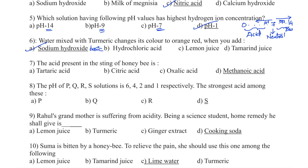Question number 7. The acid present in the sting of honey bees: Option A — Tartaric acid, Option B — Citric acid, Option C — Oxalic acid, Option D — Methanoic acid. The acid present in the sting of a honey bee is methanoic acid. It is also present in the bite of certain ants, causing an itching or burning sensation. Note: tartaric acid is present in tamarind; citric acid in citrus fruits such as lemon and orange; oxalic acid in tomato; and lactic acid in milk.